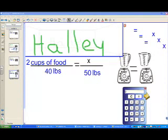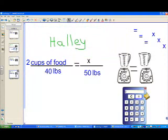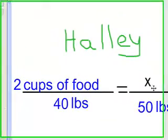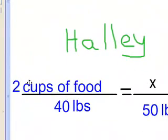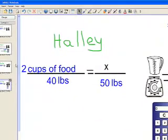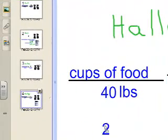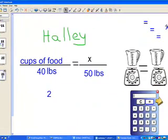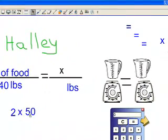Let's look at how to solve Haley's problem. We have our two cups of food, a ratio of two cups of food to 40 pounds. And we're trying to find the equivalent ratio of x over 50 pounds. So there's lots of different ways to solve this problem, but we're going to use cross multiplication. So we're going to go ahead and take our two, and we're going to multiply that times 50. That's going to be equal to 40 times x.